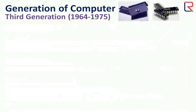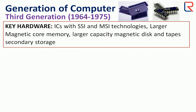The third generation period is 1964 to 1975. The key hardware are integrated circuits with small scale of integration and medium scale of integration technologies, larger magnetic core memory, larger capacity magnetic disks and tapes as secondary storage.